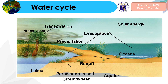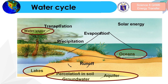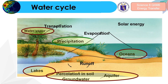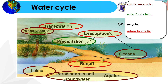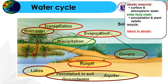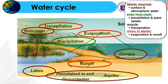To sum up the water cycle: its components include water vapor from oceans, lakes, soil, groundwater, and aquifers, along with the processes of precipitation, transpiration, and evaporation — and surface runoff, all made possible by solar energy. The abiotic reservoir is surface and atmospheric water. Water enters the food chain through precipitation and plant uptake, is recycled through transpiration, and returns to the abiotic reservoir through evaporation and runoff.